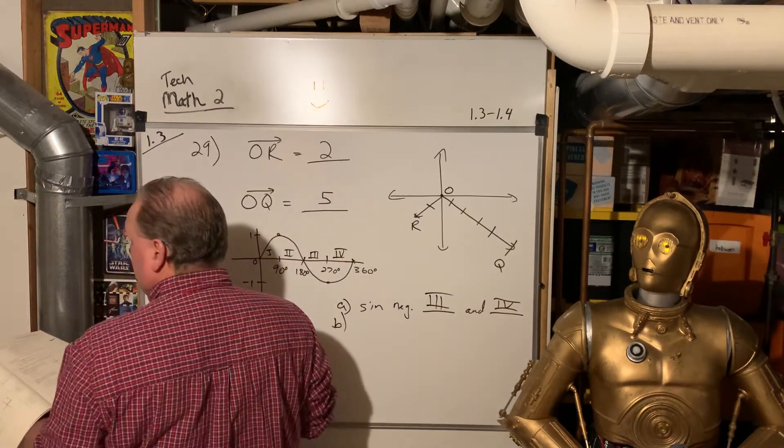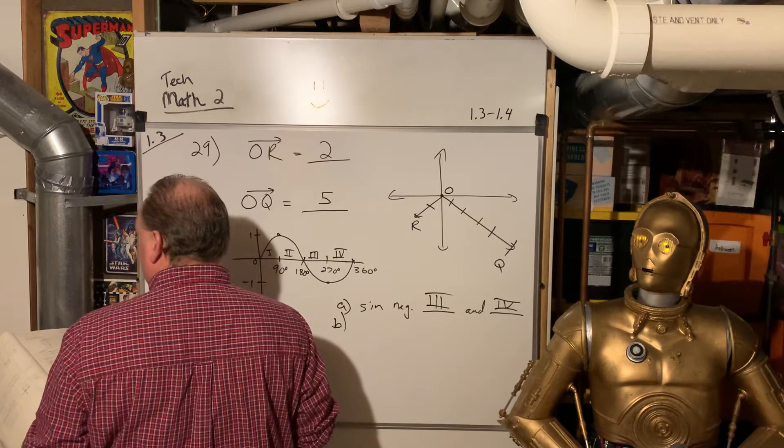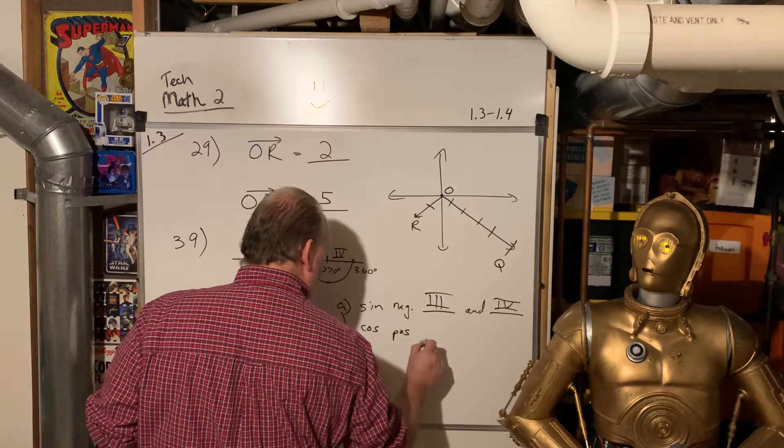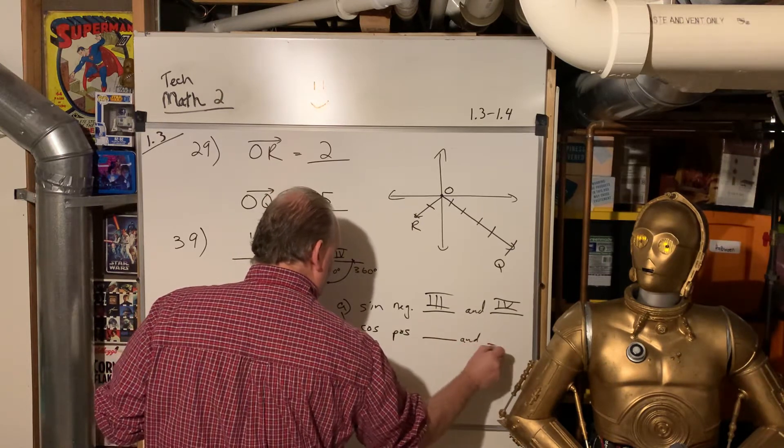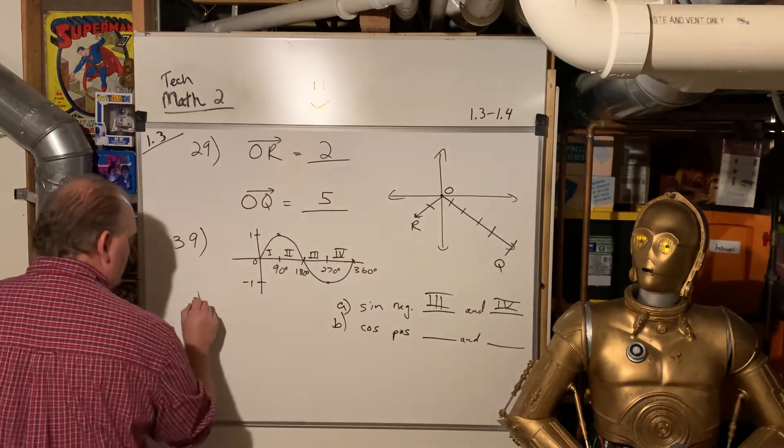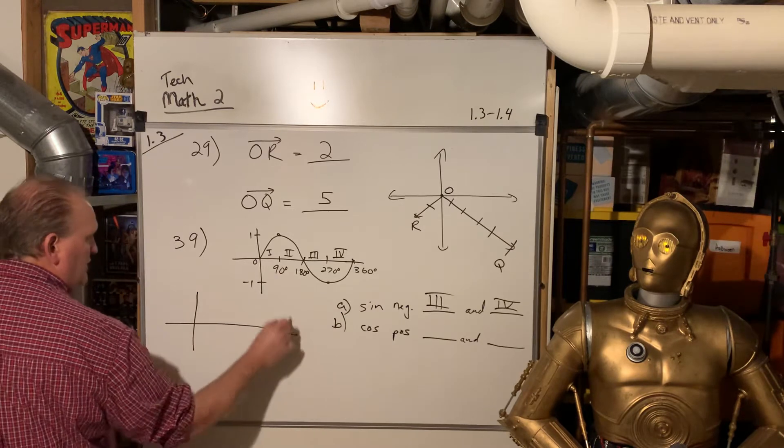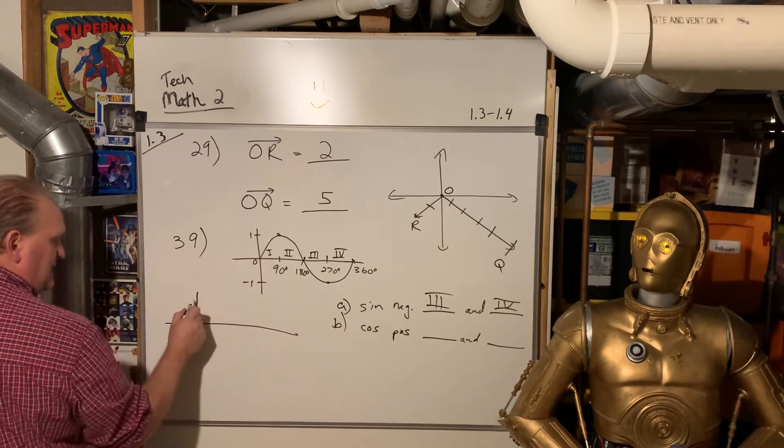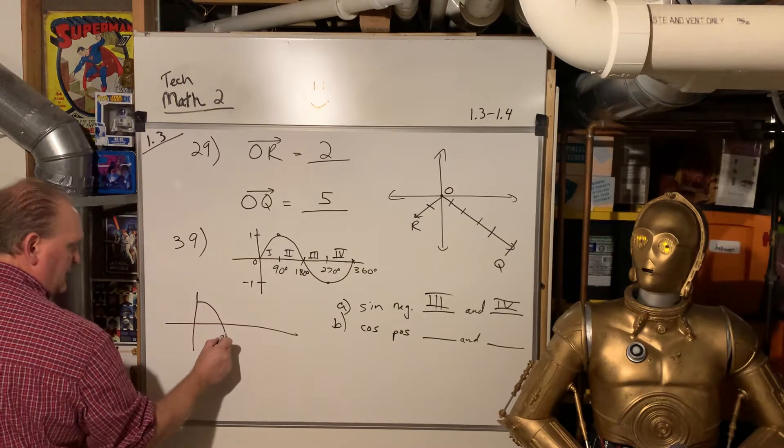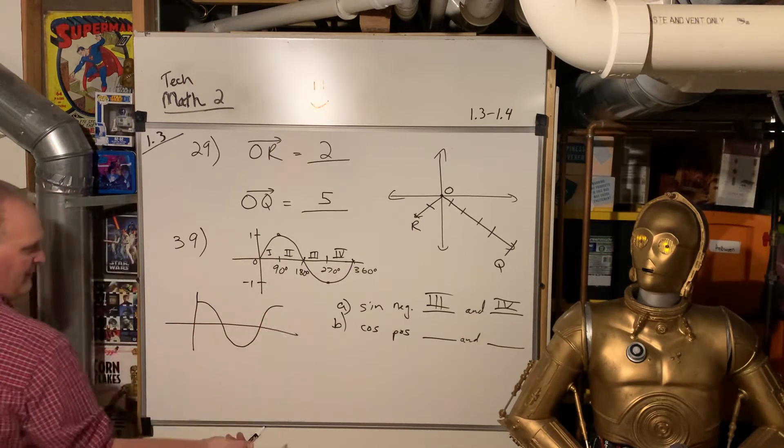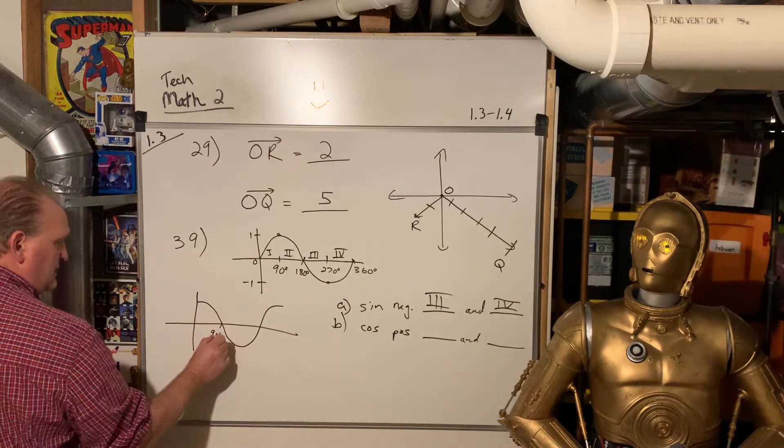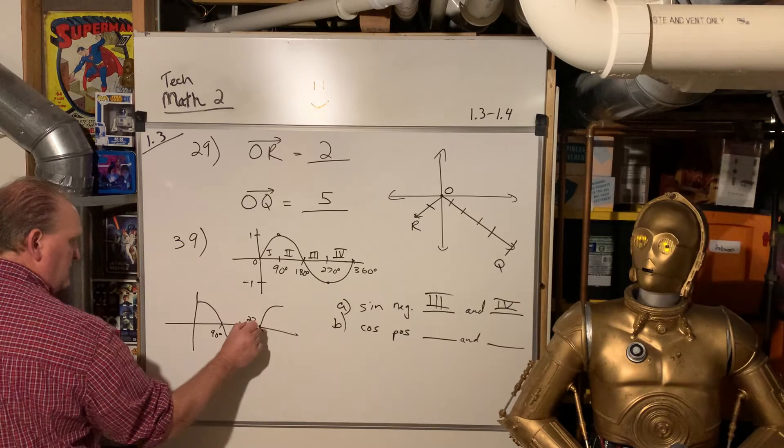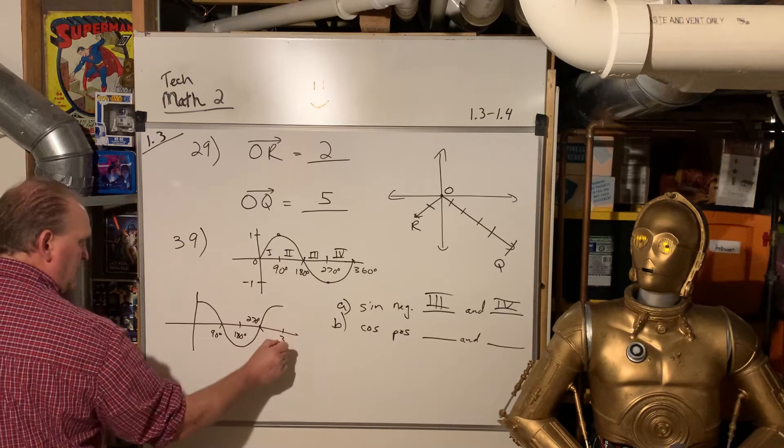Where is the cosine positive? So let's look at that. Let's look at a cosine curve. Cosine curve is just a sine curve. It's just out of sync. It starts at 90. It goes down and it goes back up. So here, this is 90 degrees. This is 180 degrees. This is 270. And 360.